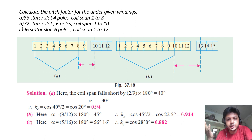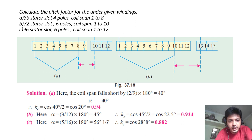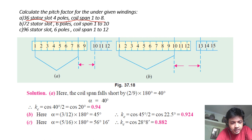Now we are going to do a numerical on pitch factor or coil span factor. It is given that there are 36 stator slots, 4 poles, and coil span is 1 to 8. As there are 36 slots and 4 poles, 36 ÷ 4 = 9 slots per pole. For a full-pitch coil, the coil span is 9 slots; that is, if a coil starts at slot number 1, it will finish at slot 10.